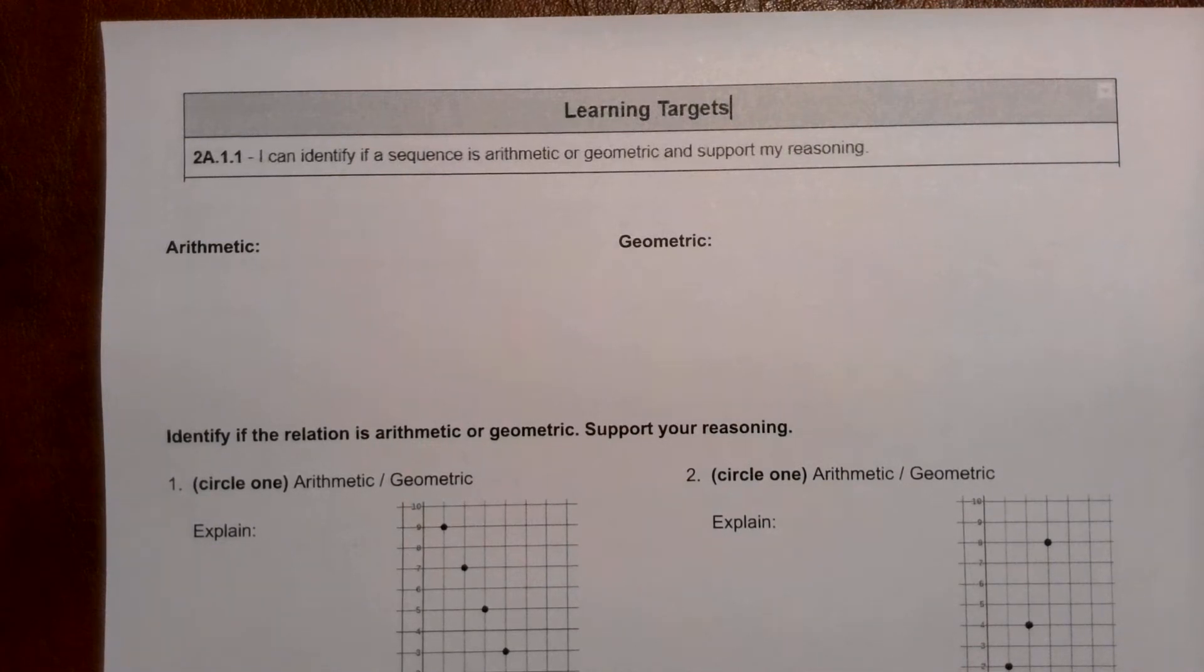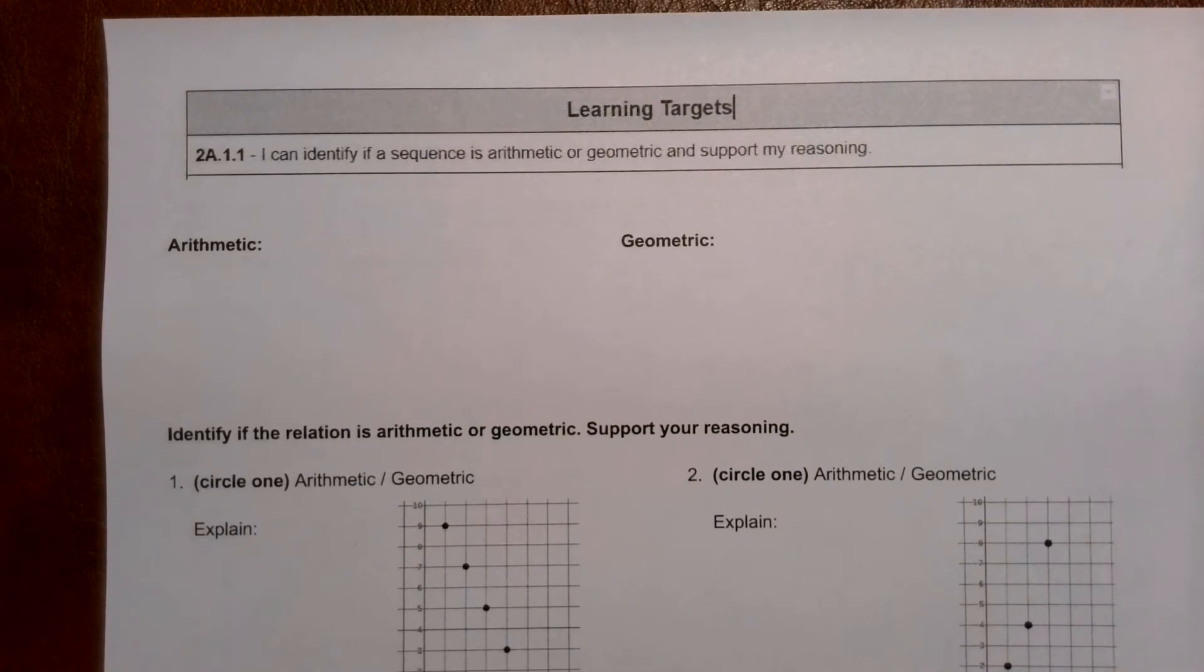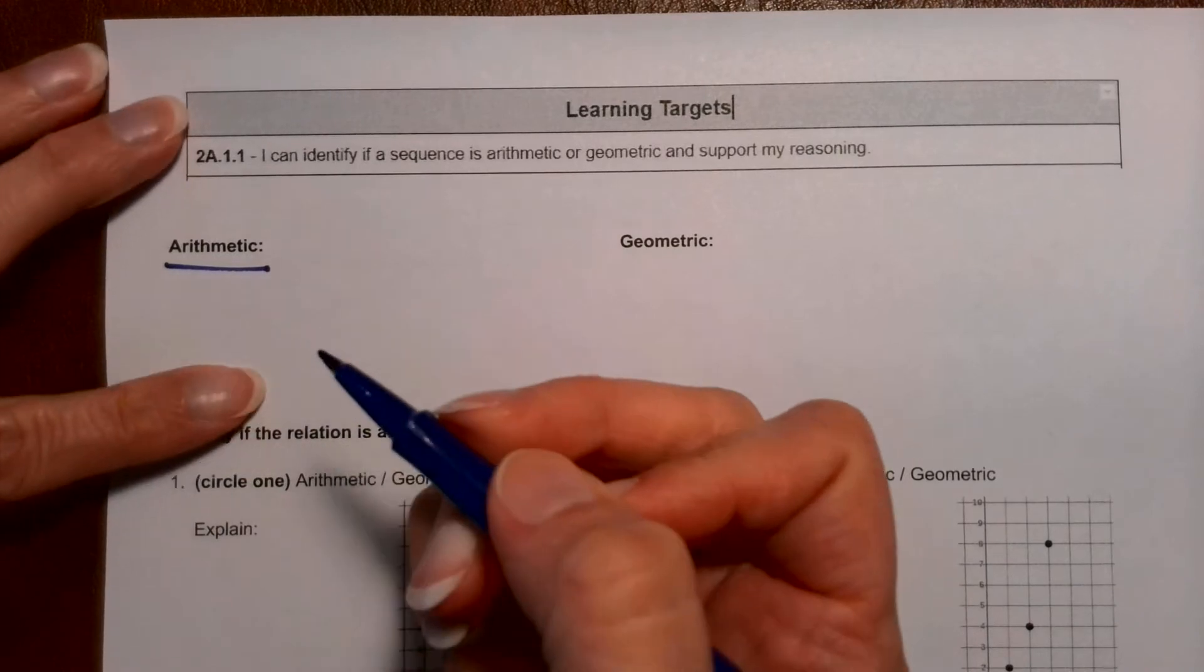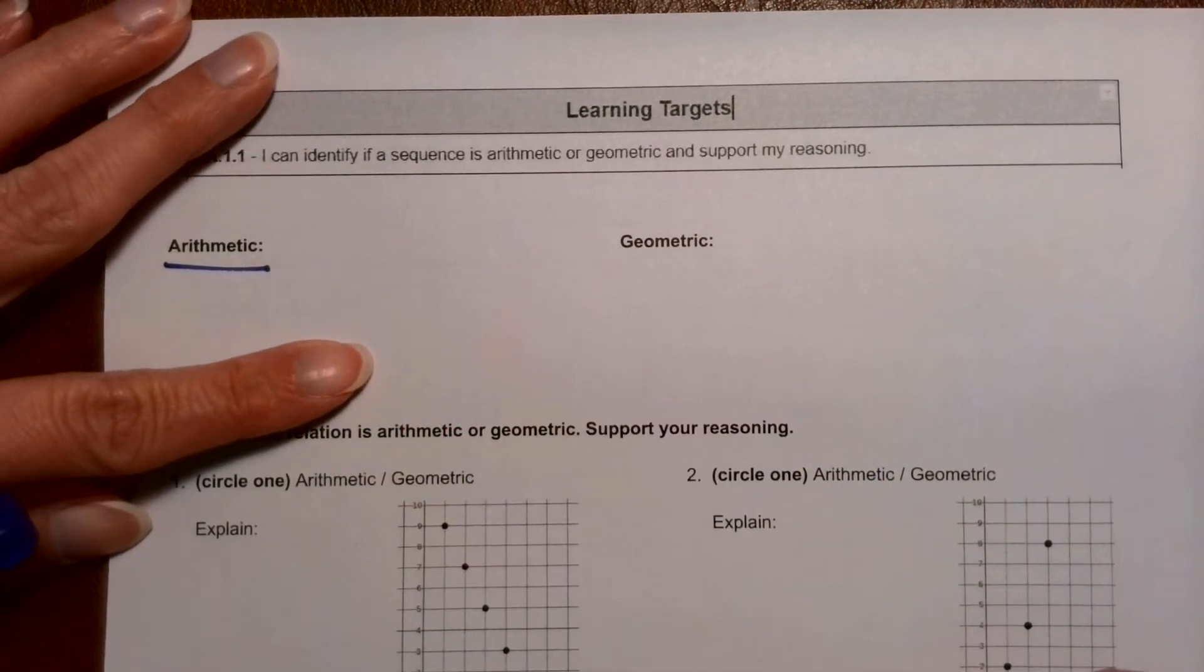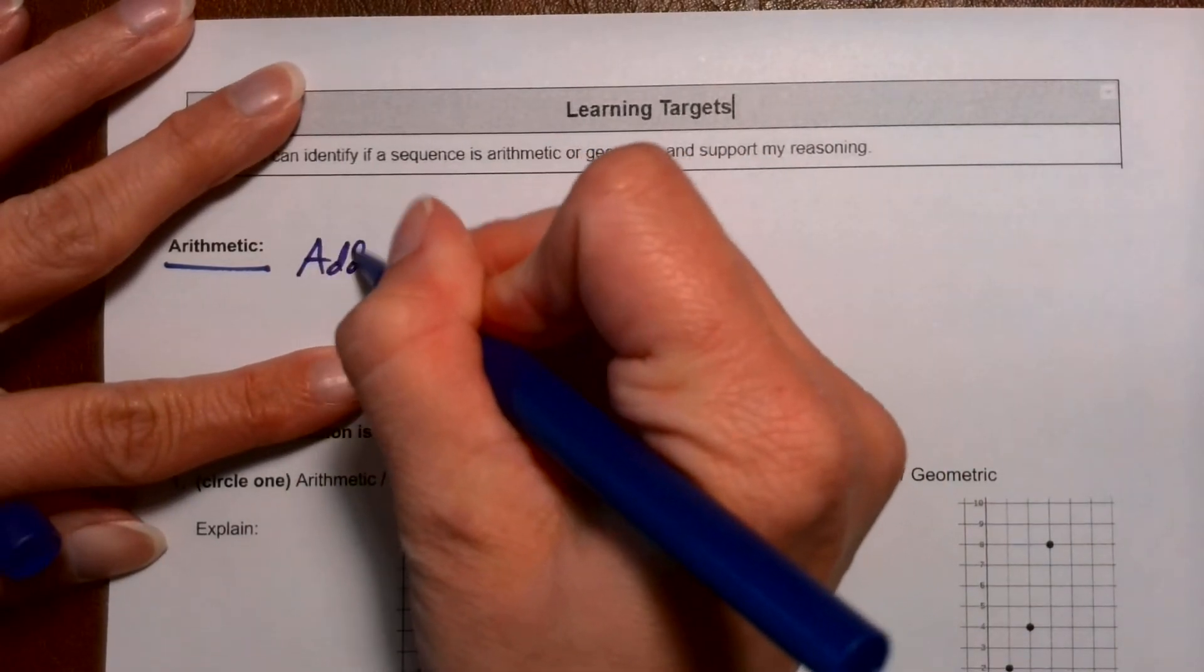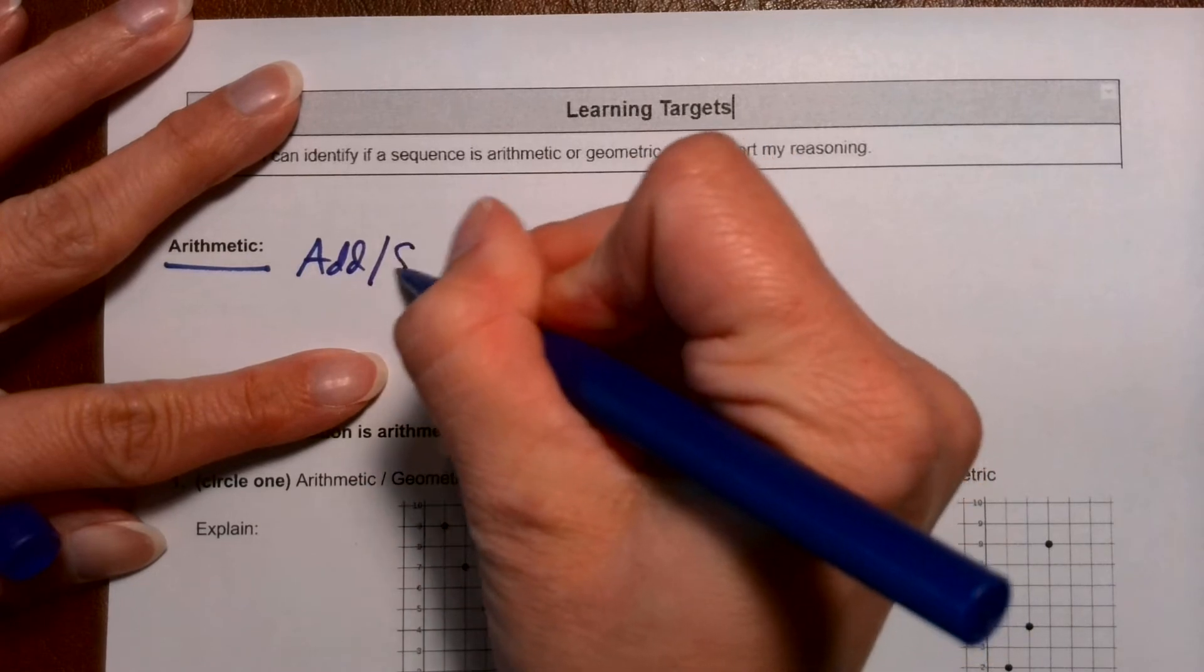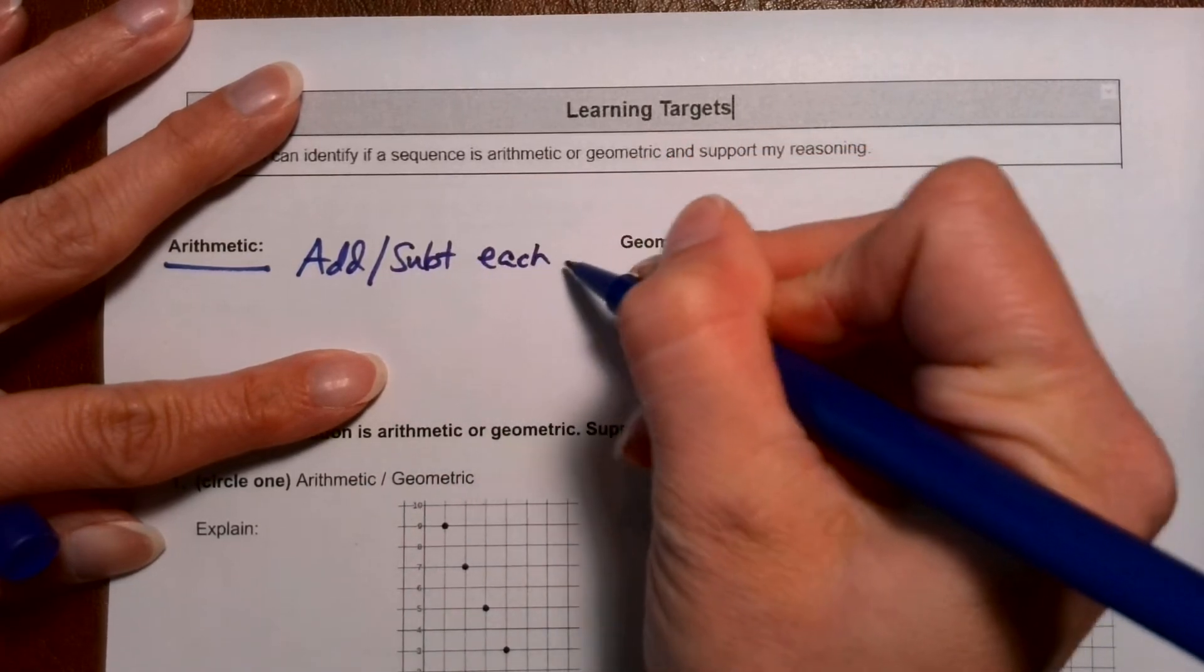Okay, Math1, let's talk about how you can explain with nice sentences. So if something is arithmetic, that means that it has an adding or subtracting pattern. So a nice explanation would say something like, it gets added or subtracted each time.